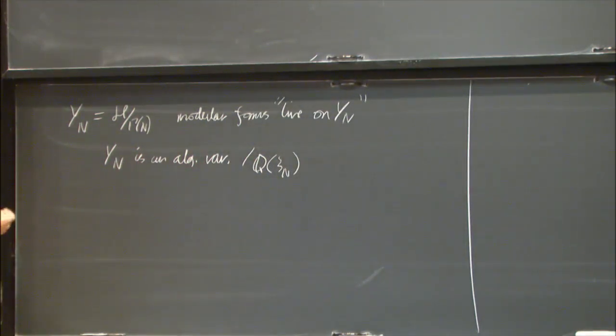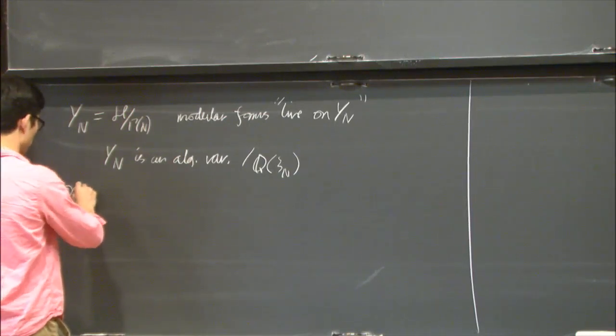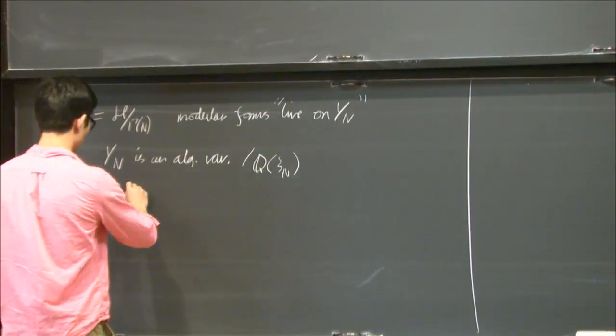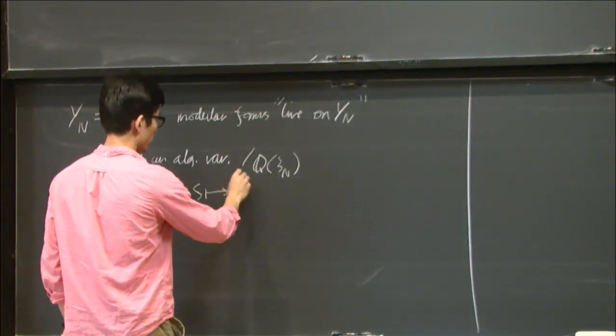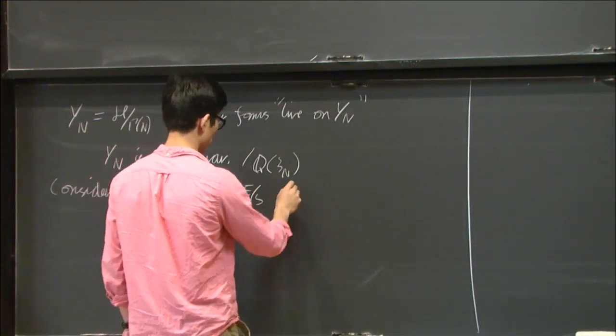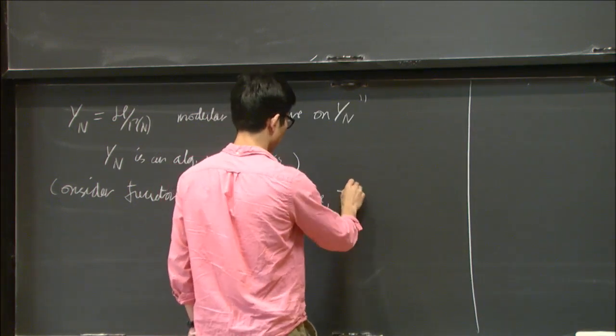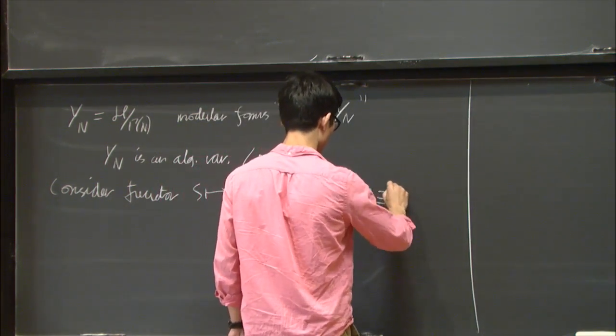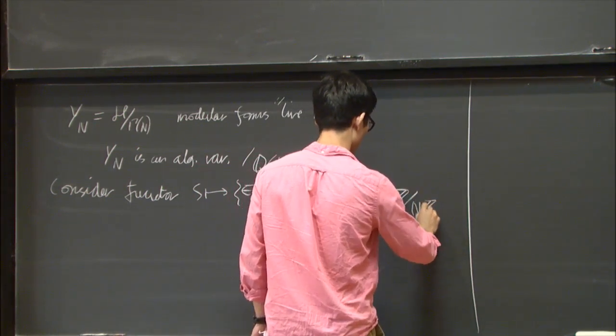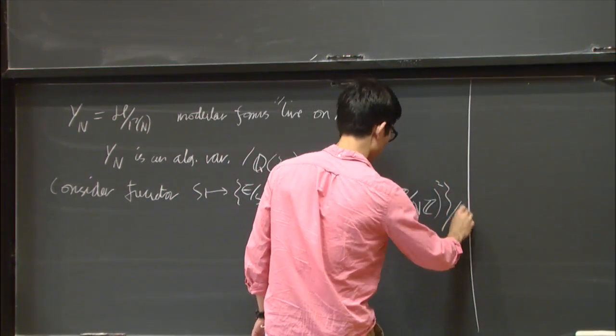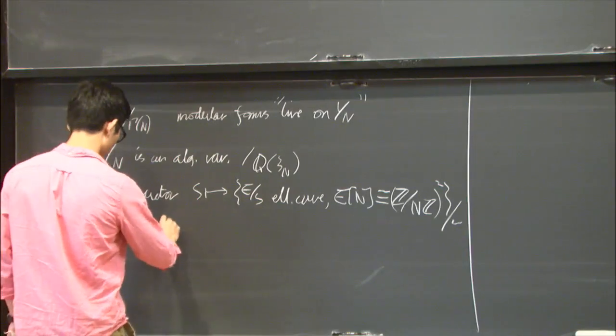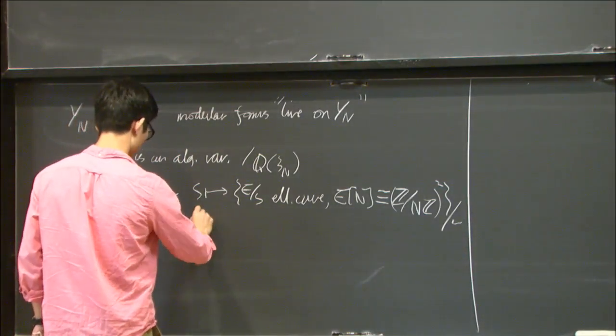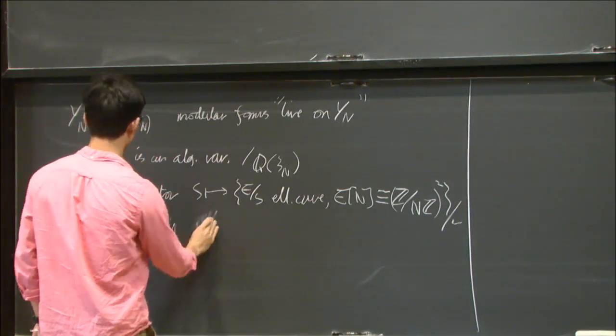From the modern point of view, you can interpret this algebraicity statement using Grothendieck's functor of points. Another way to interpret this is that if you consider the functor on schemes which takes the scheme S to the set of elliptic curves E over S, together with the trivialization of its n torsion, modulo sensible notion of isomorphism,